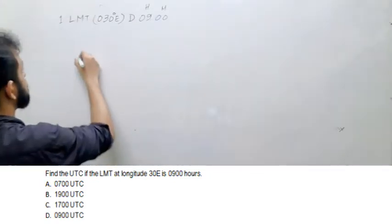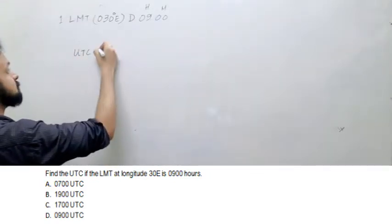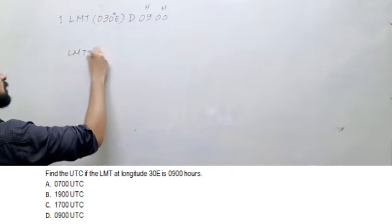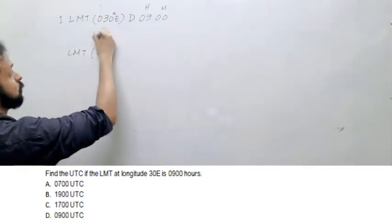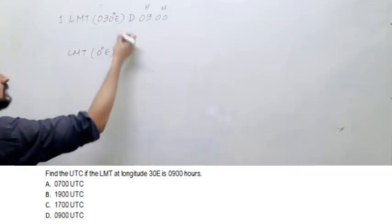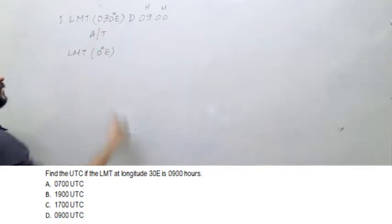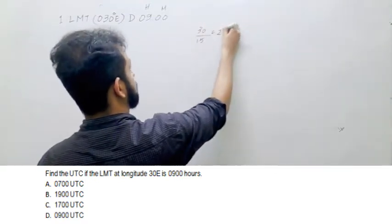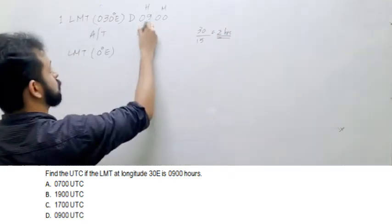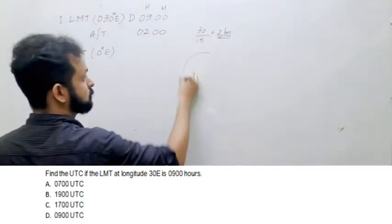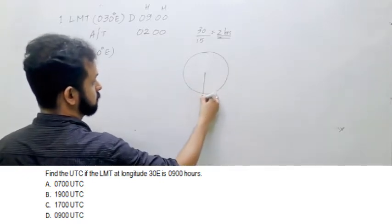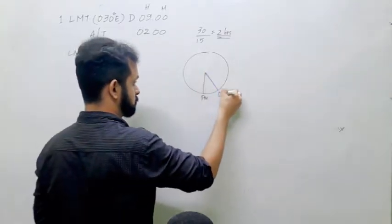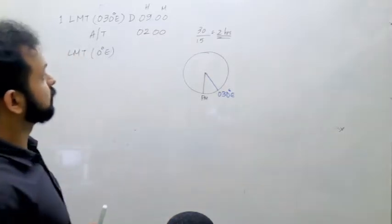UTC is the LMT on the Greenwich Meridian, so LMT at 0 degrees east is what is asked. How can you find that out? 30 degrees east — what is the arc-to-time conversion? 30 degrees divided by 15 gives 2 hours. If you draw a small diagonal, this is the prime meridian and 30 degrees east is here.